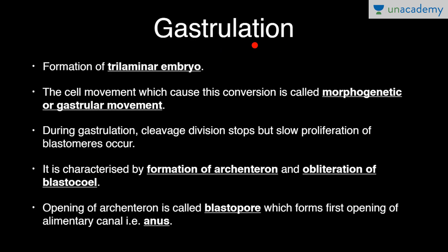Now gastrulation: formation of the tri-laminar embryo. Till now it was a bi-laminar embryo with epiblast and hypoblast. The cell movement which causes this conversion is called morphogenetic or gastrular movement — movement that causes differentiation of cells. During gastrulation, cleavage division stops but slow proliferation of blastomeres occurs. It is characterized by formation of the archenteron and obliteration of the blastocoele — the gut cavity forms and the blastocoele is obliterated.